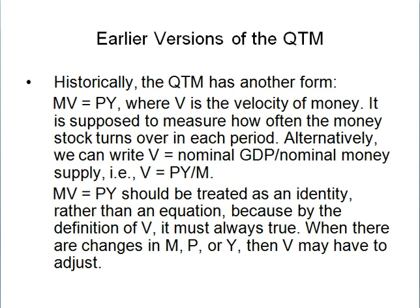Historically, the quantitative theory of money has another form: MV is equal to PY, where V is the velocity of money — it is supposed to measure how often the money stock turns over in each period. Alternatively, we can write V is equal to nominal GDP divided by nominal money supply. MV equal to PY should be treated as an identity rather than an equation, because by the definition of V it must always be true. When there are changes in money and price or output, then we may have to adjust.